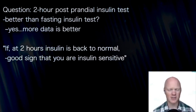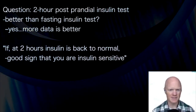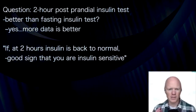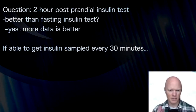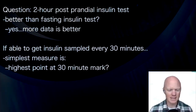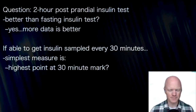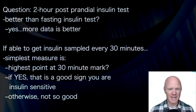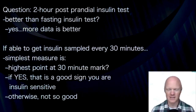At two hours post-meal, insulin may be back to normal — and if that has happened, that is a wonderful sign: that person is very insulin sensitive. But if a person is able to get blood samples with insulin measurements every 30 minutes — at 0, 30, 60, 90, and 120 minutes — the simplest way to look at that insulin curve is to ask: is the highest point of that curve at 30 minutes? If it is, that's a good sign the person is insulin-sensitive. If the peak is anywhere except 30 minutes, that means the person is less insulin-sensitive than would be ideal.